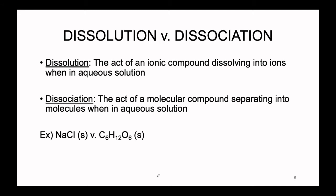Before we get into chemical reactions, we need to talk about how an individual solute interacts with the solvent. There are two different processes: dissolution and dissociation. These words look similar but define two different ways things react with water. Dissolution is the process of an ionic compound dissolving into ions in the presence of an aqueous solution. Dissociation is the act of a molecular compound separating into distinct molecules when in aqueous solution.